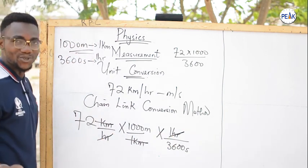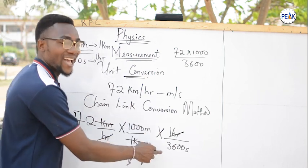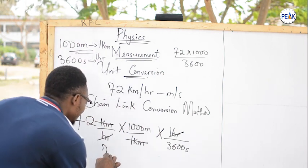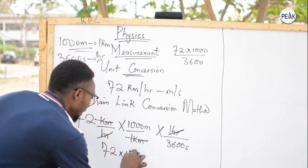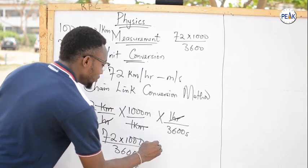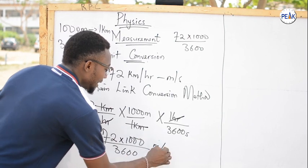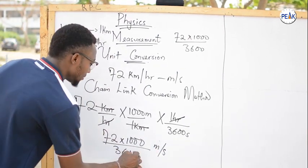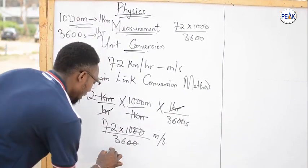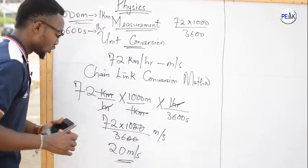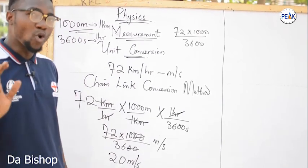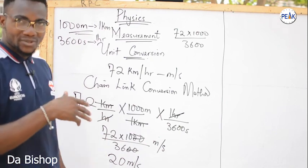You can now see your destination units: meters at the numerator and seconds at the denominator. Multiply all parameters at the top and all parameters at the bottom. That gives us 72 times 1000 divided by 3600. This yields a numerator of meters and denominator of seconds. Carrying that out: 72,000 divided by 3600 equals 20 meters per second. This is how the chain link conversion method works.